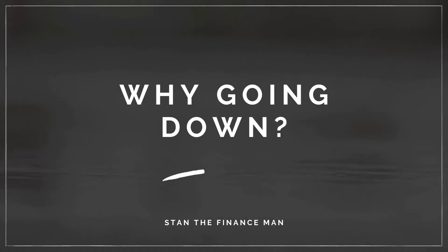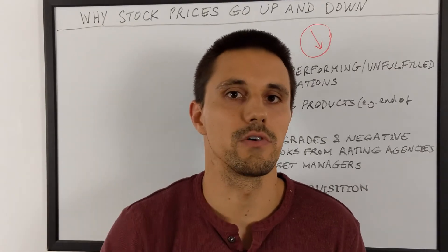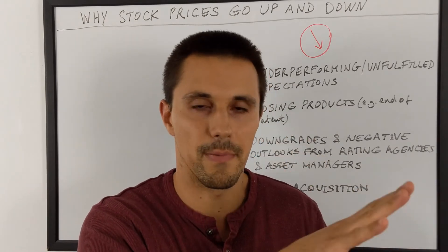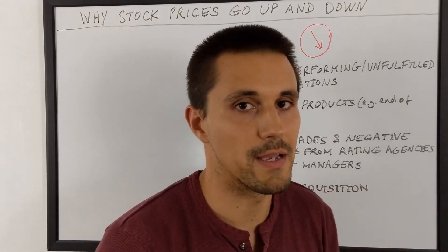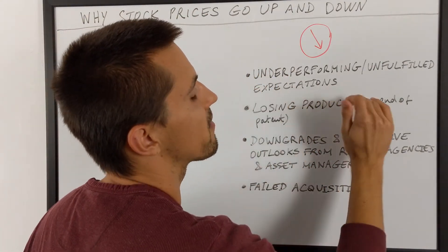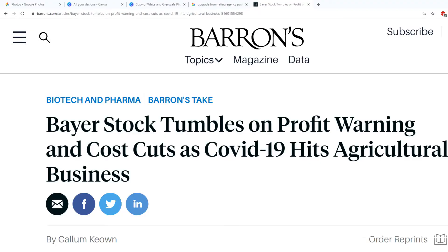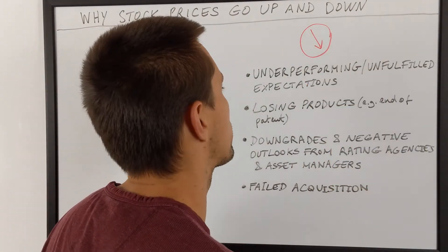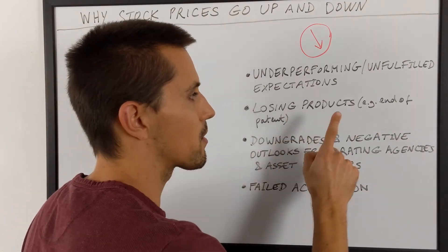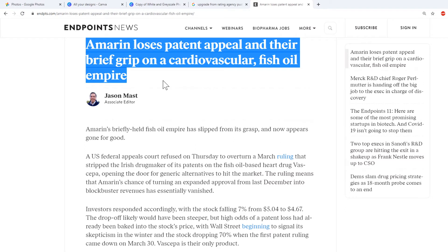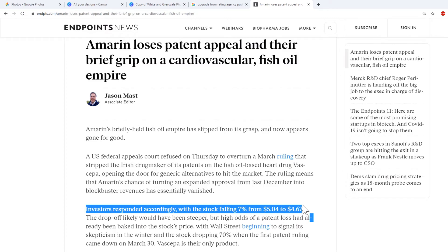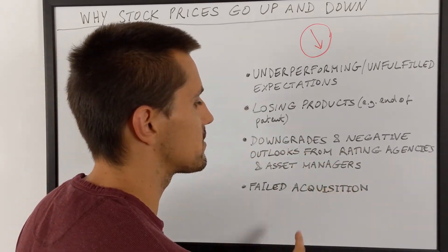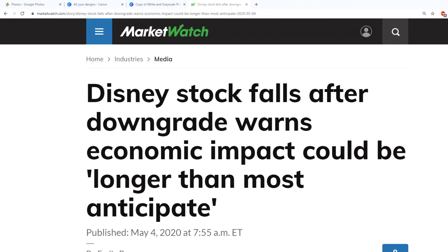Now let's talk about why stocks tend to go down. First, there is underperformance and unfulfilled expectations. It's all about future beliefs — if you are not fulfilling these beliefs, you're punished by the market and your stock will go down. Then, losing products is pretty bad. In the pharma industry for example, the end of a patent can be very damaging because competition comes in once the patent is over. There are also downgrades and negative outlooks from rating agencies and asset managers — if they say your company is not as good as expected, the market reacts and the price goes down.